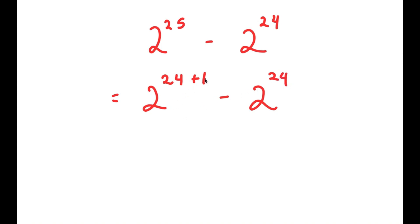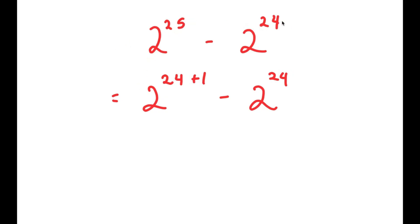The reason I did this is because we want both terms to be the same — we want to have 2 to the power of 24. So the best way of changing 2 to the power of 25 is to rewrite it as 2 to the power of 24 times something, which means rewriting it as 2 to the power of 24 plus 1.